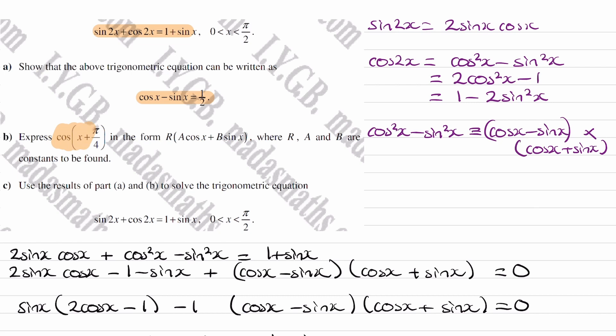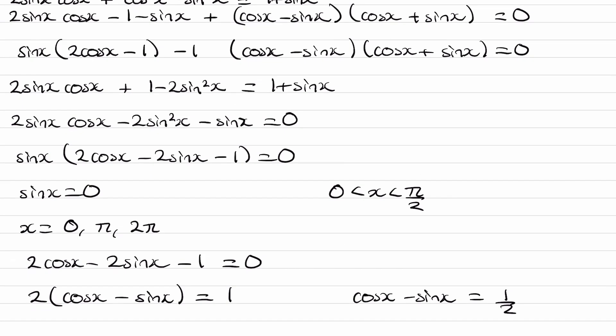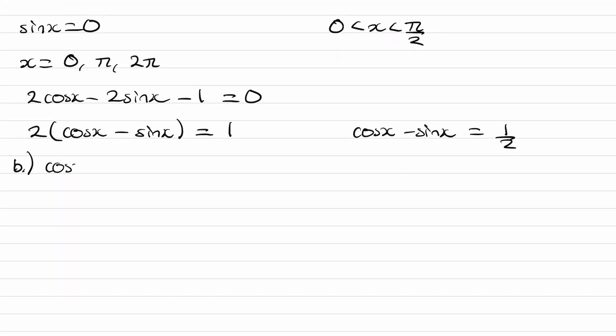Okay, for part B, express cos(x + π/4) in the form of r times a cos x plus b sin x, where r, a, and b are constants. So let's expand out the cos(x + π/4). Addition formula, cos(x + π/4). This can be rewritten as cos x cos(π/4) minus sin x sin(π/4). Cos(π/4), sin(π/4), they're both √2 over 2. Factorize out that √2 over 2, and we end up with this. I've just factorized that out.